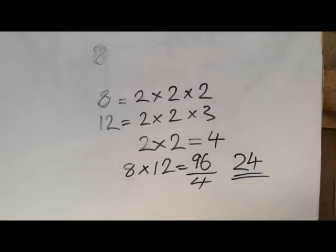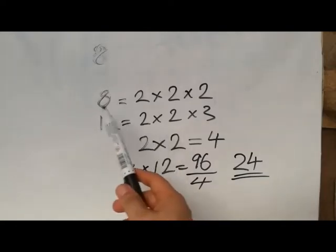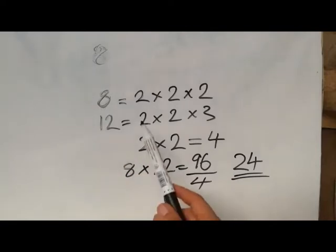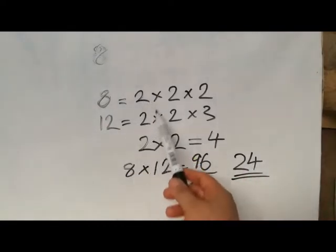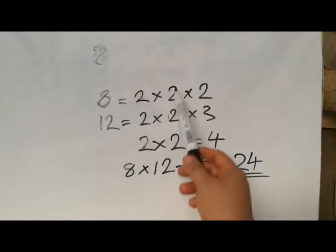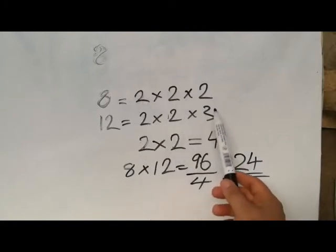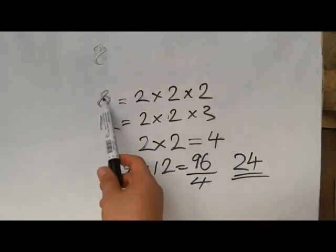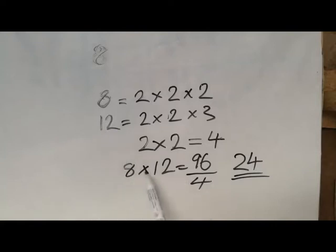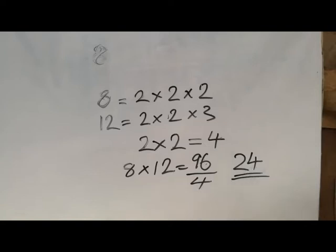96 divided by 4: 4 into 9 gives 2 remainder 1; bring down the 6 to get 16; 4 into 16 gives 4. So 96 ÷ 4 = 24, and the LCM of 8 and 12 is 24. To summarize: find the prime factors of both numbers, identify their common factors (the GCF), multiply the two numbers together, then divide by the GCF to get the LCM.